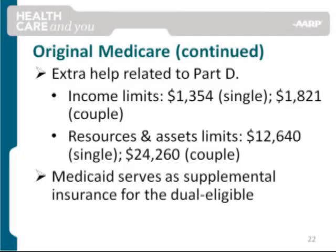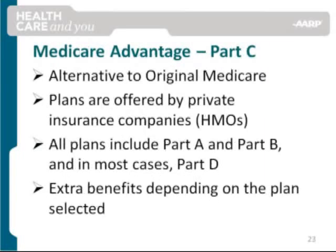Another way some Medicare recipients cover their out-of-pocket costs is through Medicaid. For those who qualify, normally referred to as dual eligibles, Medicaid serves as a supplemental insurance. Medicare is the primary insurance, and Medicaid covers the out-of-pockets not covered by Medicare. Medicaid in our state of Arizona is known as AHCCCS.